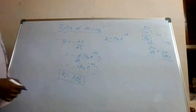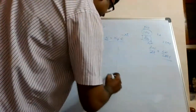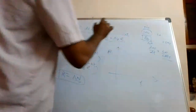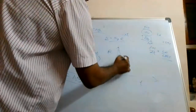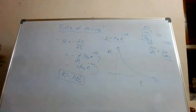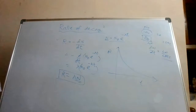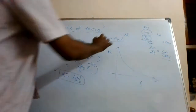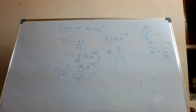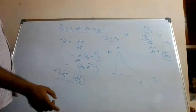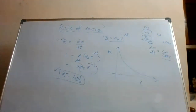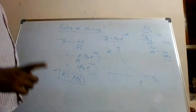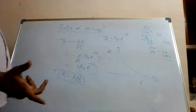To explain more simply: if initially there were 100 samples and λ is the decay constant — which depends on the type of sample, uranium, thorium, etc. — then R = λ × N, where N is the number present at that instant. The three key expressions to remember are: N = N₀ e^(−λt), R = λN, and R = −dN/dt.